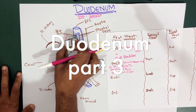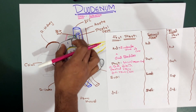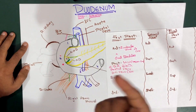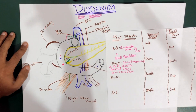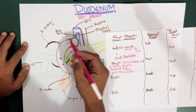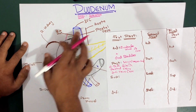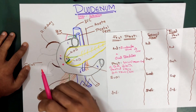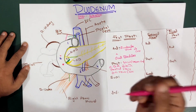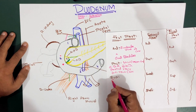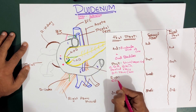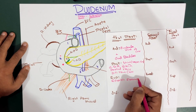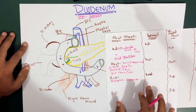On the superior side, the first part of the duodenum has the entrance into the lesser sac - we can see the epiploic foramen. You may remember this structure from the peritoneum lecture. There is an opening, an entrance towards the lesser sac from the greater sac. The epiploic foramen is something you need to memorize.